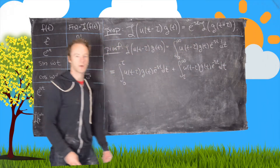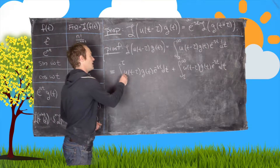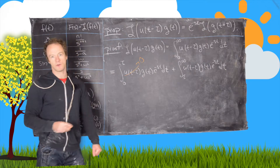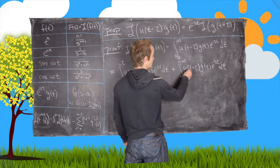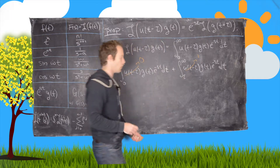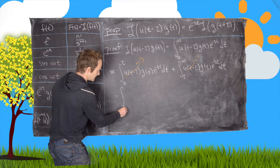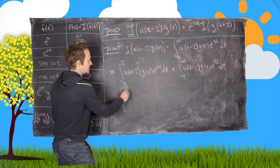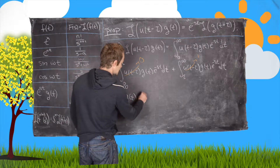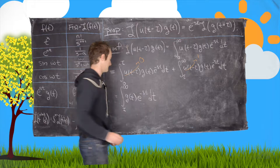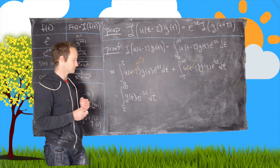In the region from 0 to τ the unit step function is zero, and from τ to infinity it is one. This causes the first integral to vanish, and the expression collapses to just the integral from τ to infinity of g(t)·e^(-st) dt.